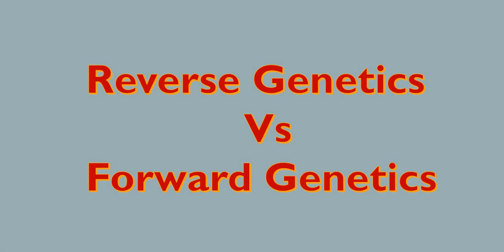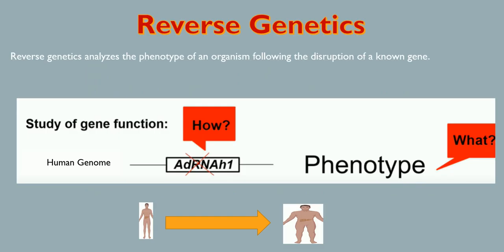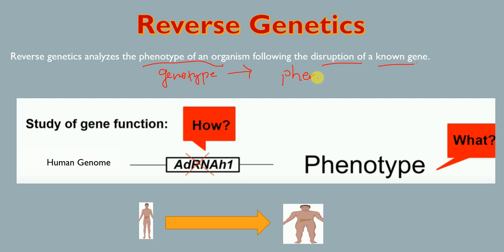In this video, I'm going to talk about the differences between reverse genetics and forward genetics. Reverse genetics analyzes the phenotype of an organism following the disruption of a known gene. It starts from the genotype and goes to the phenotype.